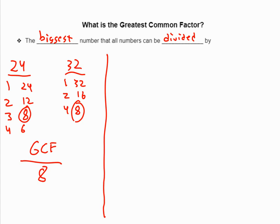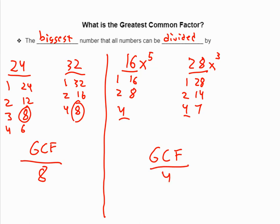If I threw some variables in there, like if I had 16x to the 5th and 28x to the 3rd, I'm trying to find the GCF of those. First I would start with 16 and 28. 16 is 1 times 16, 2 times 8, and 4 times 4. 28 is 1 times 28, 2 times 14, and 4 times 7. Biggest perfect square that goes into both of those is 4. And then for our variables, they both have an x, so it's going to have an x. And then you just take whatever the smaller of your exponents is. Because x cubed goes into x to the 5th, but x to the 5th doesn't go into x cubed. So my GCF here is 4x cubed.